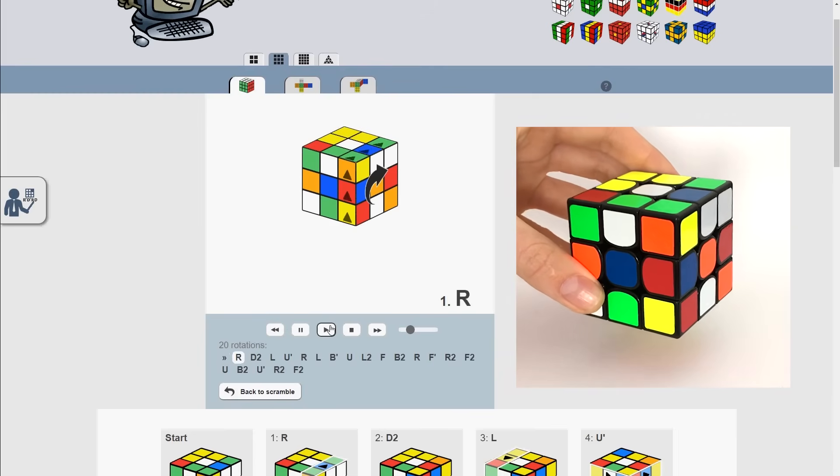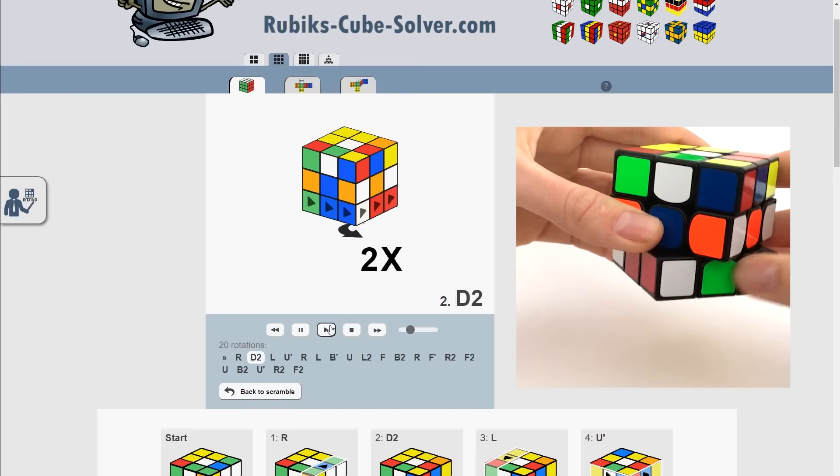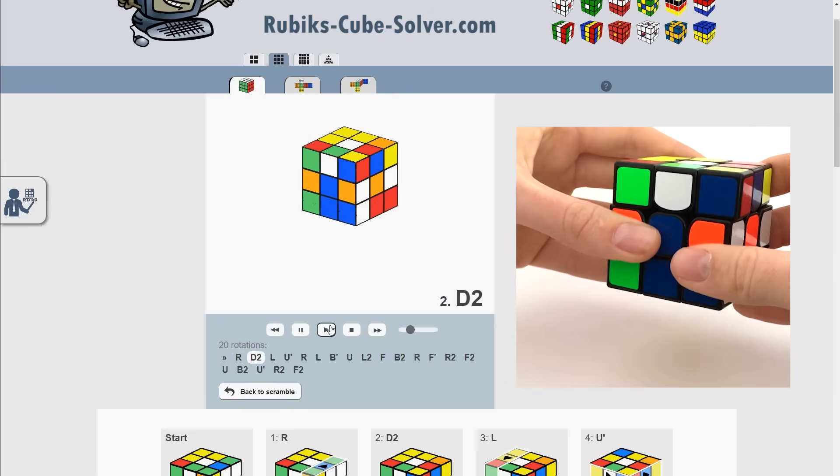Now I'm playing back the solution and applying the rotations on my Rubik's Cube. Be careful, because you'll end up with a scrambled cube if you make a wrong move.